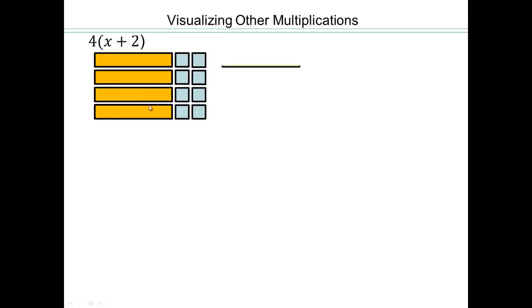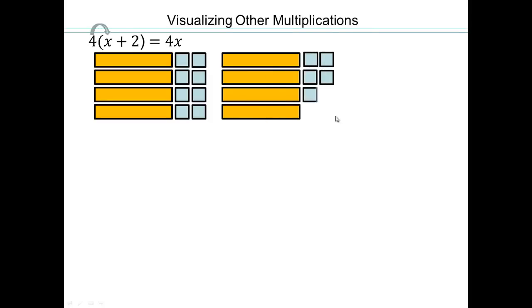Let's visualize multiplication. 4 times x plus 2, 4 rows of x plus 2's, which is the same as I can just lay all the x's down first, which is 4 times x, and then lay all the 2's down, which is 4 times 2, or 8. Multiplication distributes over addition. That's what we see right here.